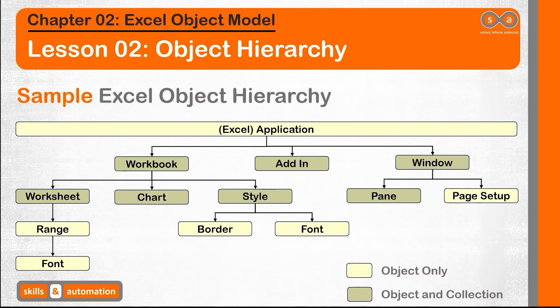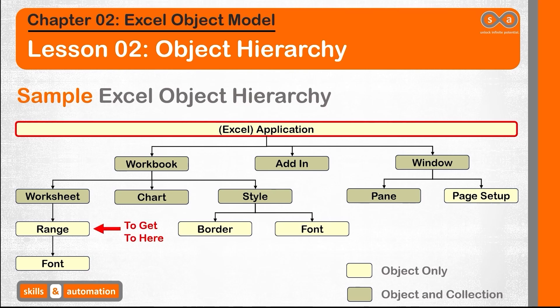Let's look at our object hierarchy for Excel. An Excel application consists of workbooks, worksheets, charts, shapes, cells, etc. These are all objects and they can be arranged in a hierarchy under the application object. The application object represents the entire Excel application and will always be the top level object. This hierarchical structure signifies that if we want to get to any object, we need to follow the hierarchy starting from the top level object down to the object that we are after.